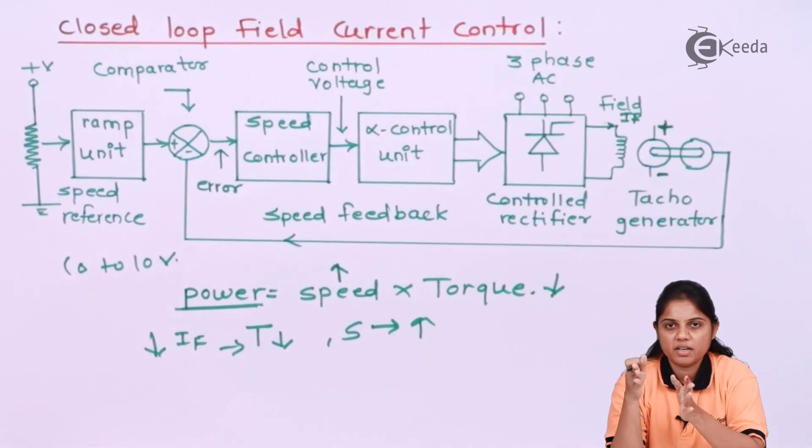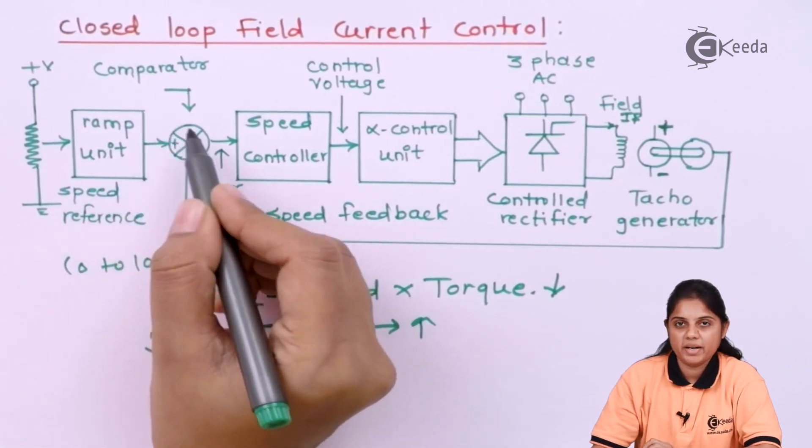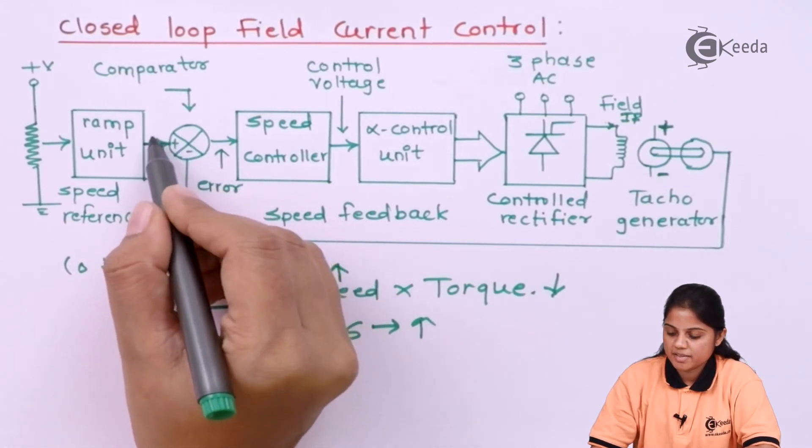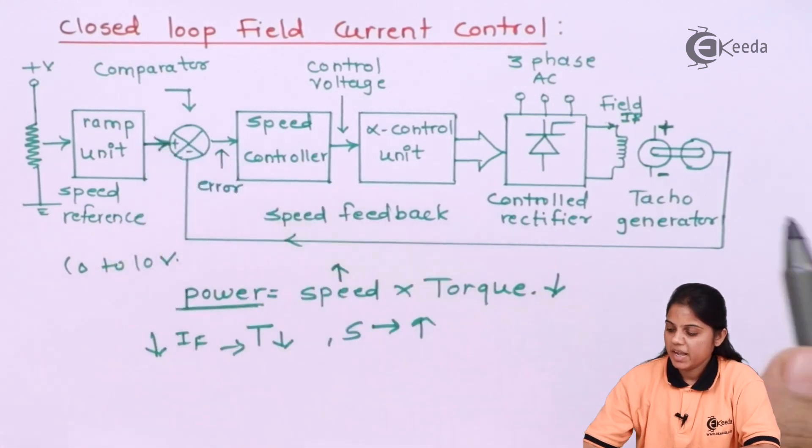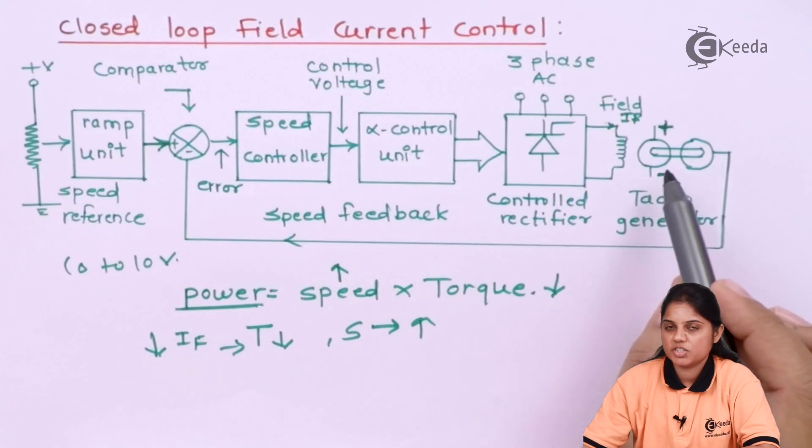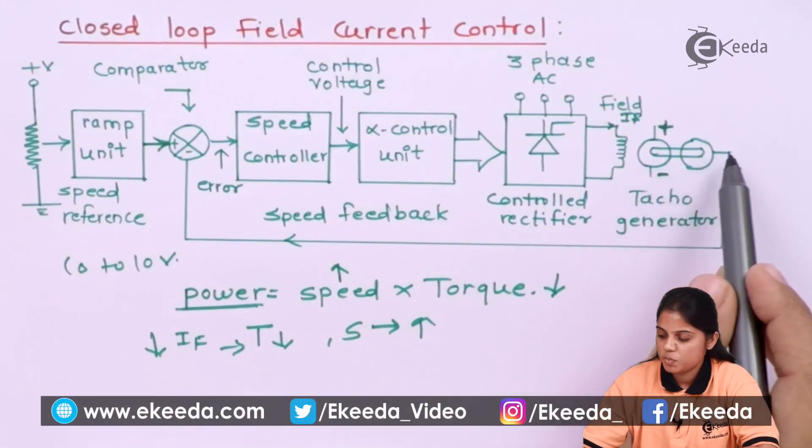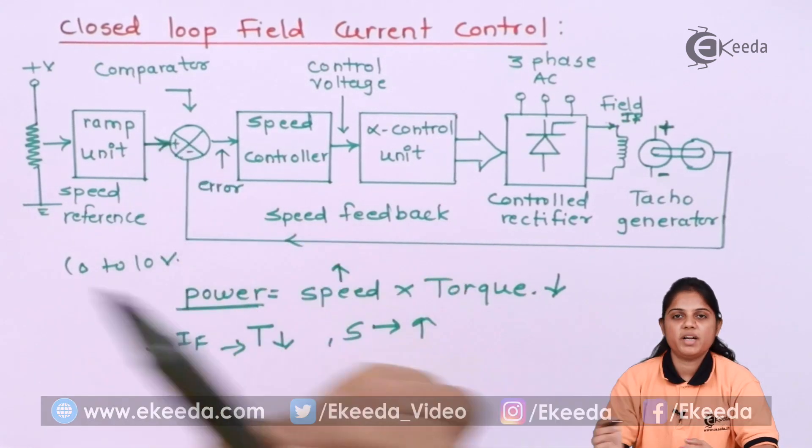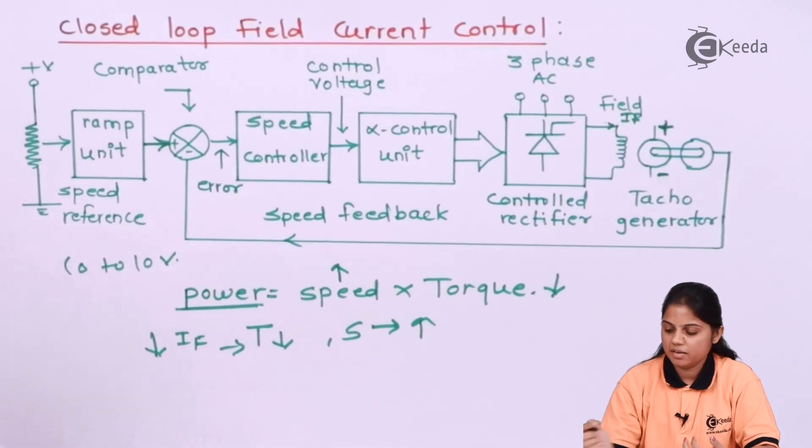That means speed is gradually increasing and that speed is given to the comparator to compare with the actual speed. So here what you are getting at this point is nothing but your reference speed. That is given to the comparator. And from the tachogenerator which is connected to the armature winding, you will get the speed of the actual motor and that will be fed back. If the actual speed and the reference speed are different, it will produce an error.